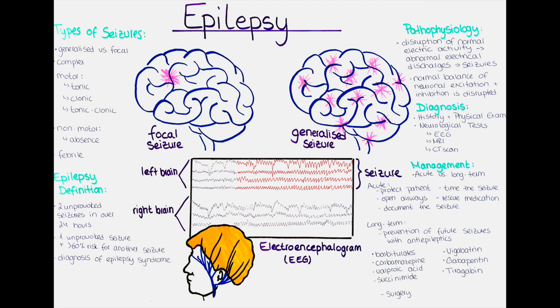Epilepsy can affect people of all ages, although it is more common in children and older adults. Children typically have generalized epilepsy, while older adults more often present with focal epilepsy. Epilepsy affects around 0.5 to 1% of all people, while around 2 to 4% of all people experience a solitarily occurring seizure in their life without having epilepsy.